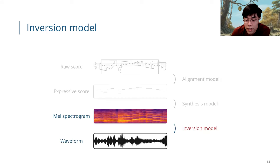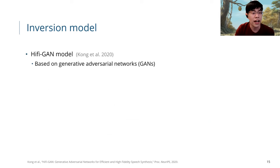Finally, we have the inversion model, which basically inverts the mel spectrogram back to waveform. This is a classic problem in signal processing domain. We simply use the HiFi-GAN model. It's based on generative adversarial networks, and it worked quite well on this mel spectrogram inversion problem. So we just use it as it is.